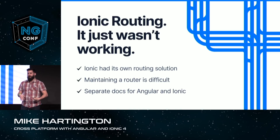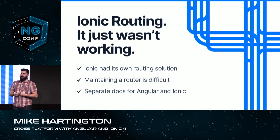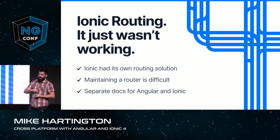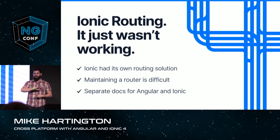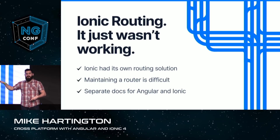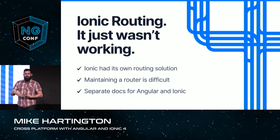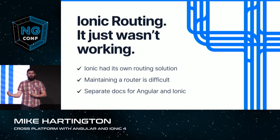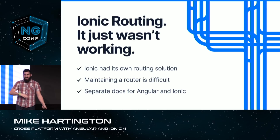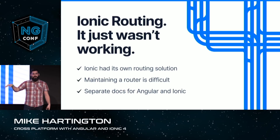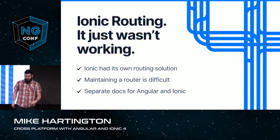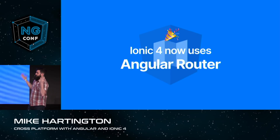That worked really well for native apps, but as progressive web apps started becoming more important, we realized we should probably have a URL so people can share the app. Then we needed authentication or navigation guards, and we needed to handle redirects to bad URLs. We were essentially recreating pieces of the Angular router in such a different way that people would get confused — like, wait, I thought Ionic was built with Angular. Why do I have to learn all these different ways of doing things? That was probably the most painful part, realizing community members were just confused.